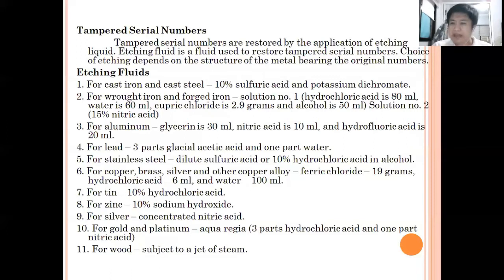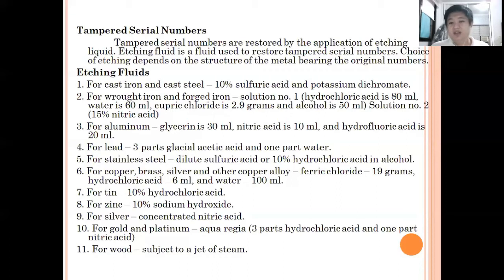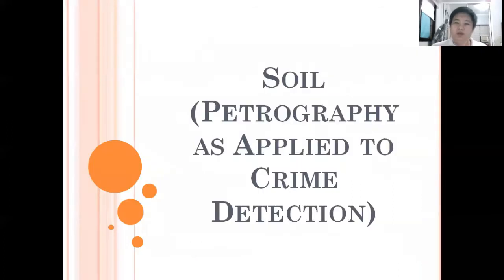If you are in doubt about a vehicle or motorcycle you purchased, bring the certificate of registration (CR) and compare the chassis number and engine number on the CR with those on the actual vehicle. They should match. If they do not match, there is a possibility that the motor vehicle is either car-napped or motor-napped.